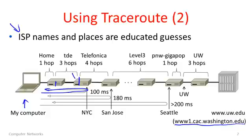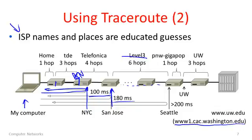It looks like we went through the Telefonica network for four hops. Shortly after entering it, we went to New York City, with the round trip time rising to about 100 milliseconds — consistent with Barcelona to New York. After four hops we emerge in another network called Level 3, entering it in San Jose, and then going through the Level 3 network for six hops. By this time the round trip time rose to about 180 milliseconds, as we went from New York all the way through the network to San Jose on the west coast of America, getting close to Seattle.